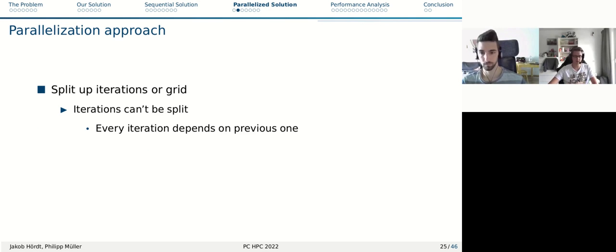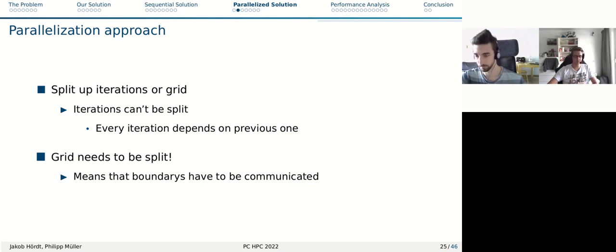Our parallelization approach. There are two possibilities to parallelize the program. First, you could split up the iterations. If you remember, we did 10,000, you could split that among certain threads or you split the grid. The problem is iterations can't be split because every iteration depends on the previous one. So that would not make sense, which leads us to the grid needing to be split. And that means that the boundaries have to be communicated.